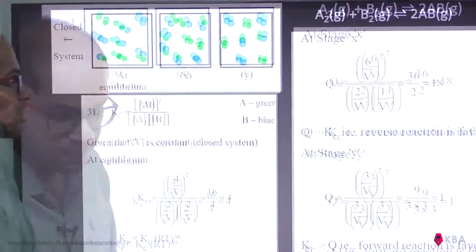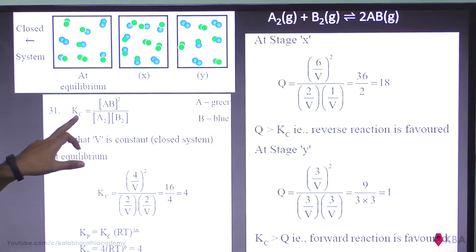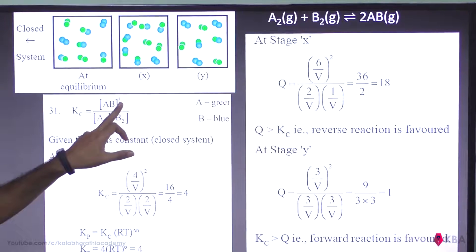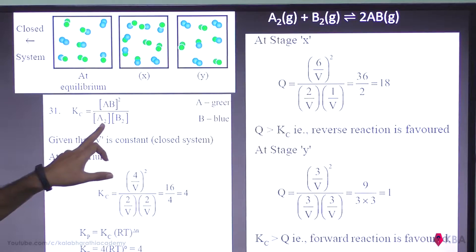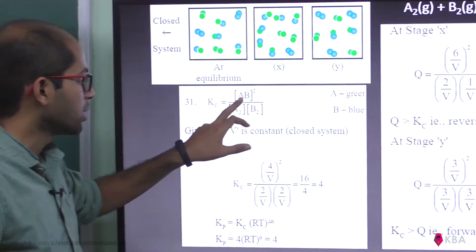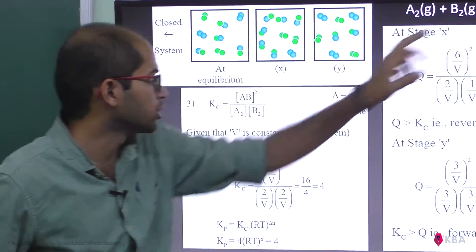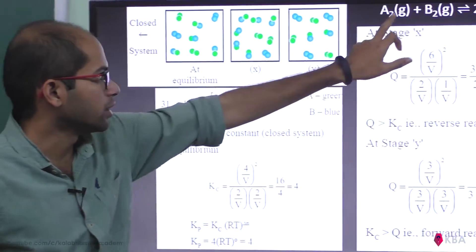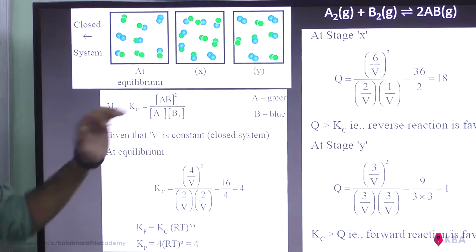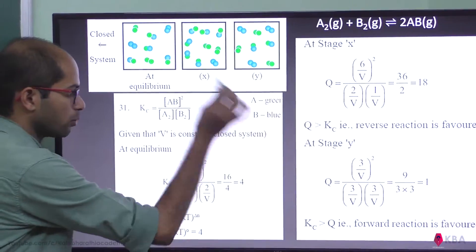First question. For this reaction, we know that Kc is the equilibrium concentration — concentration raised to the power number of moles of products divided by concentration raised to the power number of moles of reactants. So Kc = [AB]² divided by [A2][B2]¹. Products divided by reactants: A is green, B is blue.